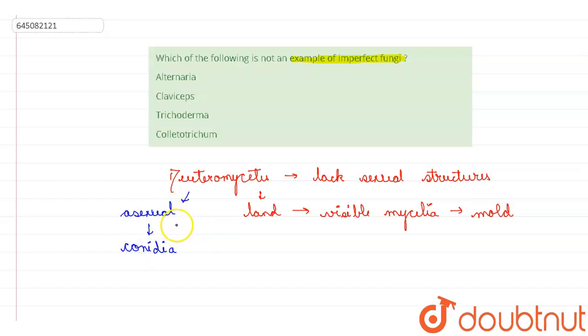So there is the formation of the conidia which will help in the asexual reproduction of this imperfect fungi. Now if you talk about the examples of imperfect fungi, the examples are Alternaria, then you can also call it as Trichoderma.